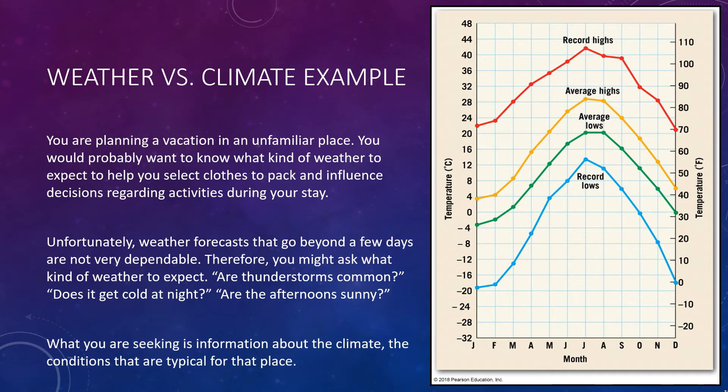Suppose you were planning a vacation in an unfamiliar place. You would probably want to know what kind of weather to expect. Such information would help you select clothes to pack and could influence decisions you make regarding activities during your stay. Unfortunately, weather forecasts that go beyond a few days are not dependable. Therefore, you might ask someone familiar with the area about what kind of weather you can expect, such as are thunderstorms common, does it get cold at night, or are the afternoons sunny? What you are seeking is information about the climate, that is, the conditions that are typical for that place.